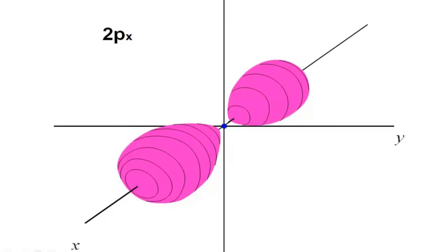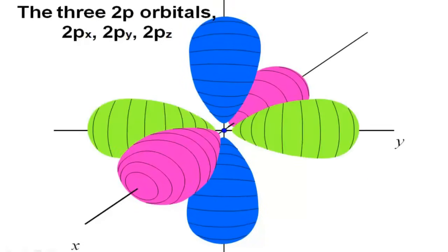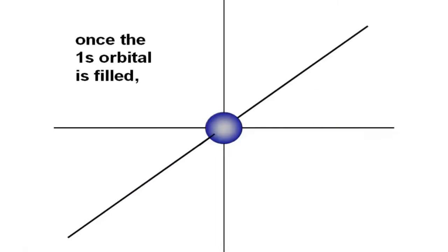If we need to accommodate a sixth electron — carbon — it could go into the 2pz orbital. The seventh electron for nitrogen could go into the 2py orbital. Each orbital can have a maximum of two electrons, so once each of the 2p orbitals has one electron, they can start to pair up and fill each orbital with two electrons total, giving the three 2p orbitals a maximum of six electrons. If the p electrons are filling up, we know the 1s and 2s must also be filled up.